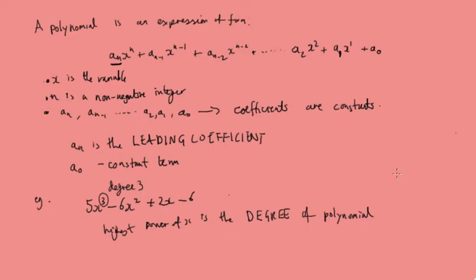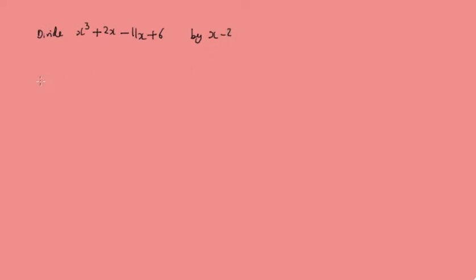What we're now going to do is use the skills of long division to divide polynomials, and there's a step-by-step process we can follow to help us do that. We'll do an example: divide x³ plus 2x² minus 11x plus 6 by x minus 2. Let's set this up like a long division. So x³ plus 2x² minus 11x plus 6 is our dividend, and x minus 2 is our divisor.